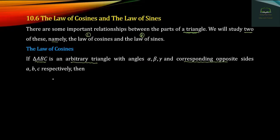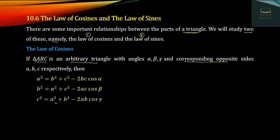The law of cosines gives us three equations. a² = b² + c² − 2bc·cosA; b² = a² + c² − 2ac·cosB; c² = a² + b² − 2ab·cosC.